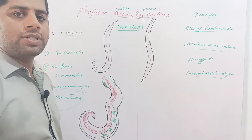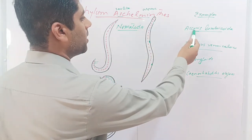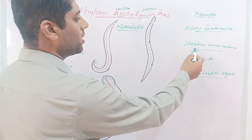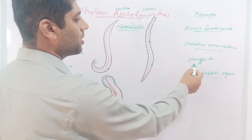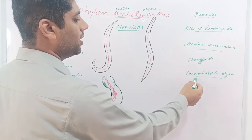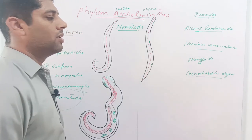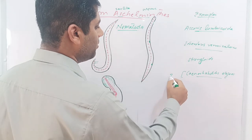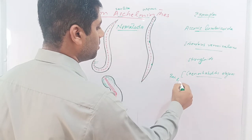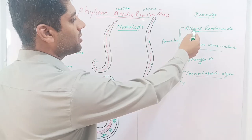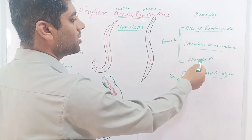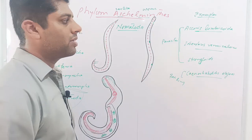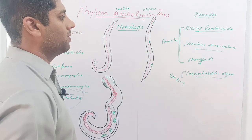Common examples of phylum Nematoda are Ascaris lumbricoides, Enterobius vermicularis, Strongyloides, and Caenorhabditis elegans. Caenorhabditis elegans is free-living, while Ascaris lumbricoides, Enterobius vermicularis, and Strongyloides are parasites of humans and animals.